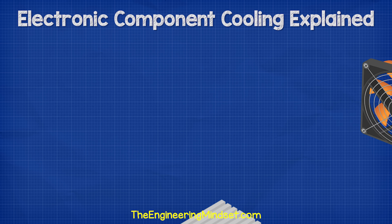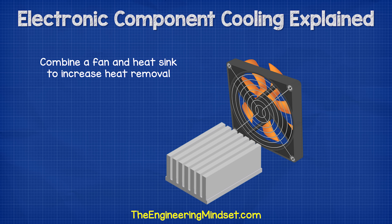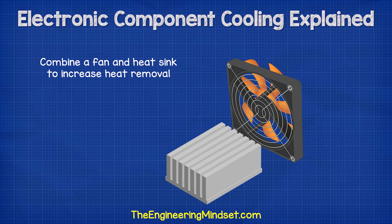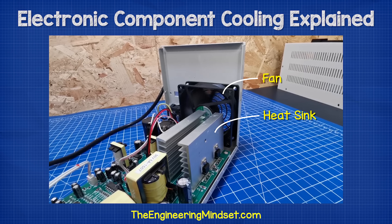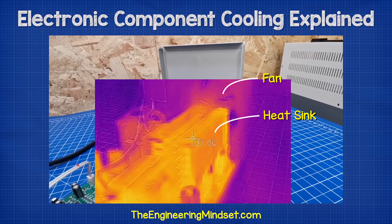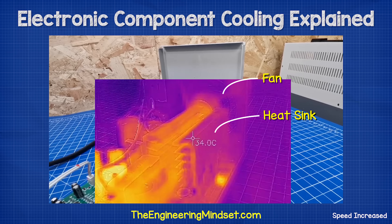There is a limit to how much we can remove with this method though. And so the next stage is to use a fan to blow ambient air over the component and heat sink. That's exactly the method used in this DC bench power supply. The fan and the heat sink are combined to remove the excess heat. You can see the heat is dissipating out through the heat sink. And when I cut the power but leave the fan running, the temperature drops very quickly.